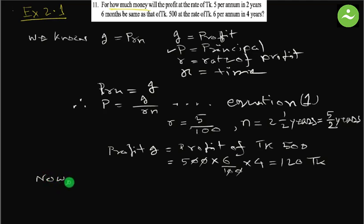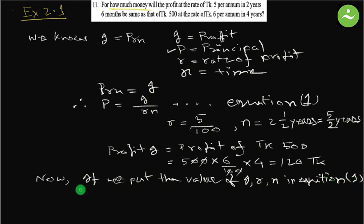Now if we put the value of i, r and n in equation 1, we get p equals to 120 divided by r, value of r is 5 by 100, n value of n is 5 by 2.